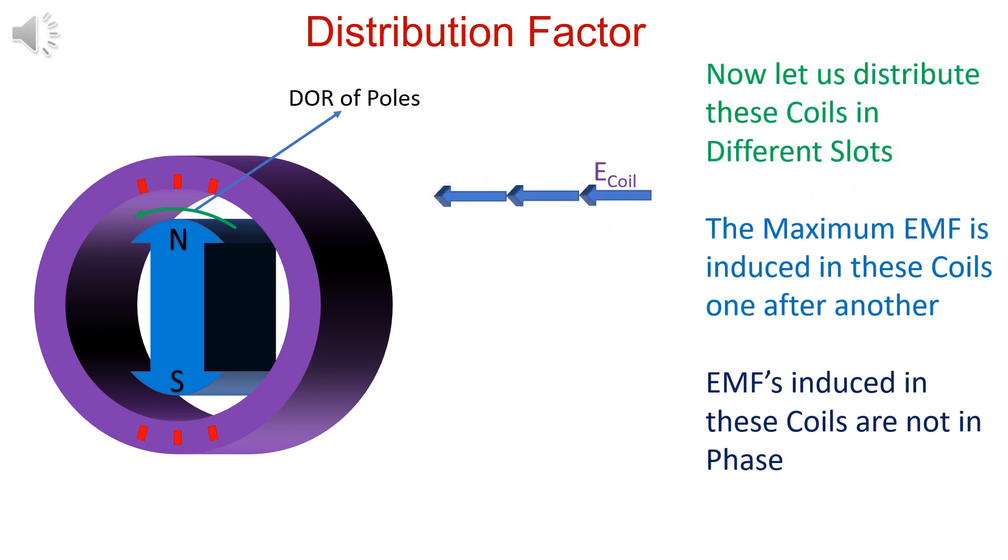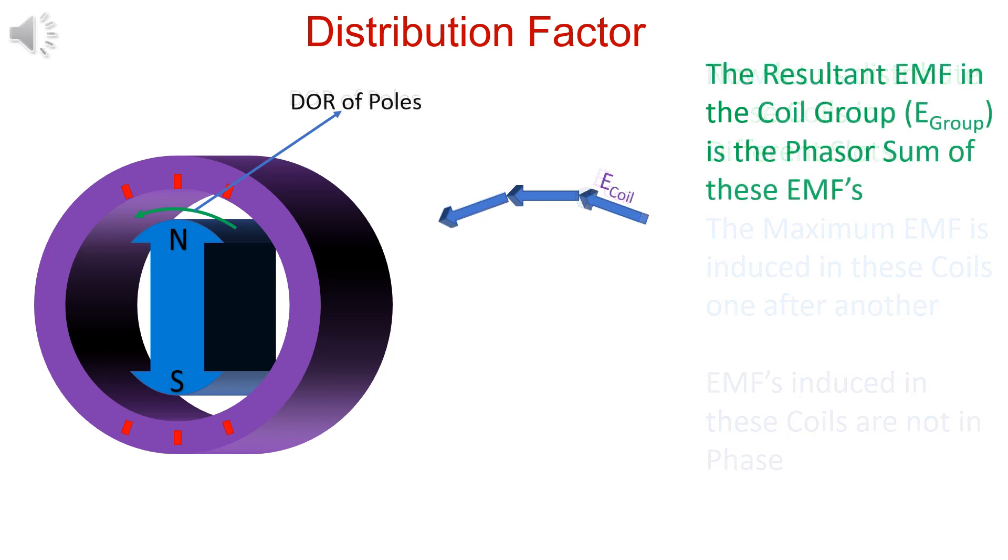In a distributed winding, EMFs induced in a coil are not in phase. Phasor addition is done to obtain the resultant EMF.